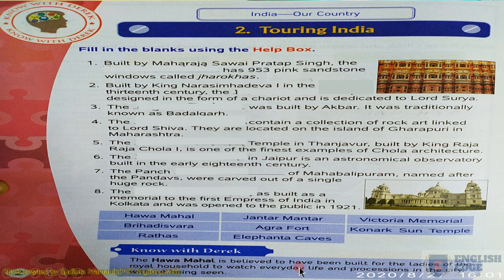The second question: built by King Narasimha Deva in the 13th century, the blank is designed in the form of a chariot and is dedicated to Lord Surya. The answer is Konark Sun Temple.